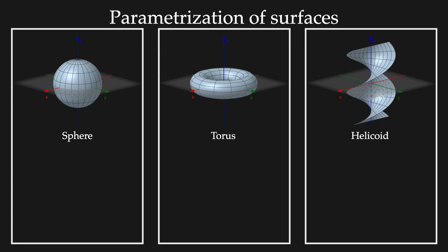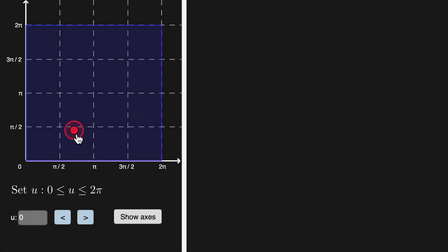So now we can provide functions or parametric equations for the sphere, torus and helicoid. We can even explore more complicated surfaces like the famous Klein bottle for example.